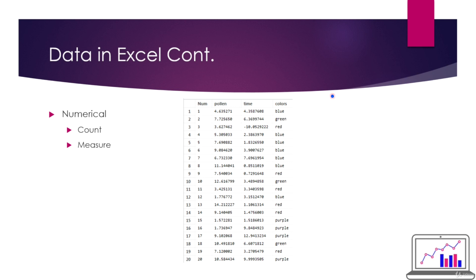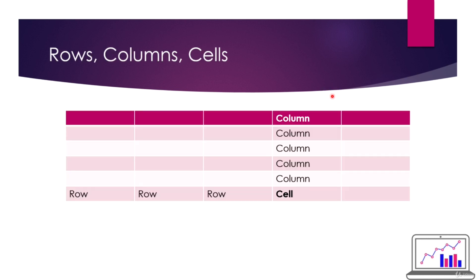Here are rows, columns, and cells - it gets a little confusing sometimes. How I like to think of it: rows are like rows in church - you have a row here and a row there. Columns are like Roman columns - those big ones going straight down. And cells are like human cells. Your cell is going to be the combination of a row and a column.